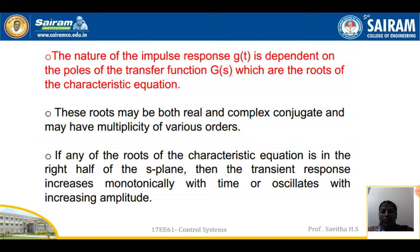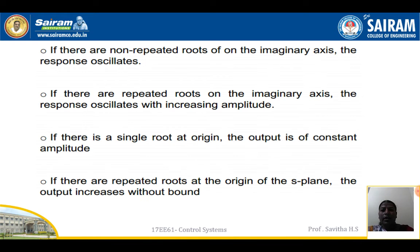The nature of the impulse response g(t) is dependent on the poles of the transfer function G(s), which are the roots of the characteristic equation. These roots may be both real and complex conjugate and may have multiplicity of various orders. If any of the roots is in the right half of the s-plane, the transient response increases monotonically with time or oscillates with increasing amplitude. If there are non-repeated roots on the imaginary axis, the response oscillates. If there are repeated roots on the imaginary axis, the response oscillates with increasing amplitude. If there is a single root at origin, the output is of constant amplitude. If there are repeated roots at the origin, the output increases without bound.